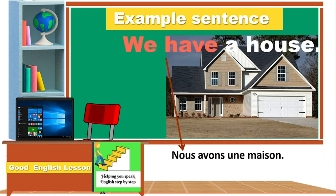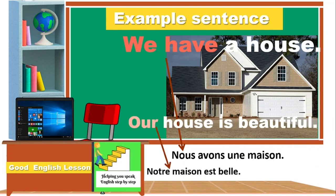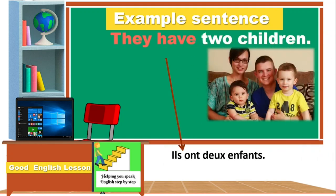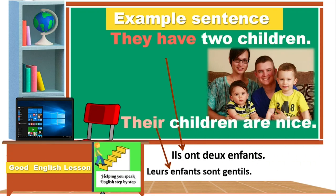We have a house. Our house is beautiful. They have two children. Their children are nice.